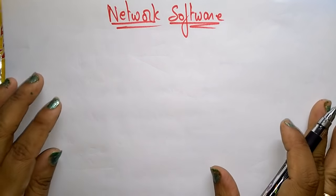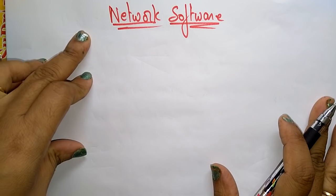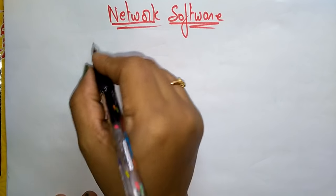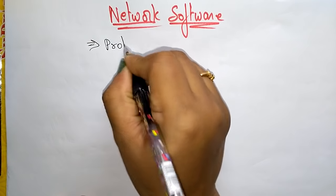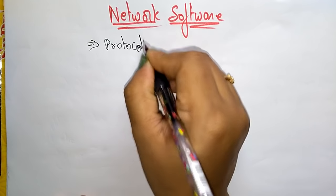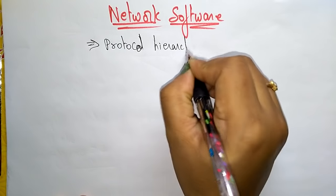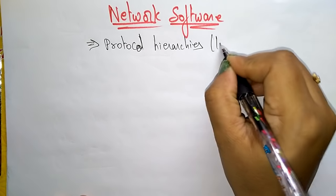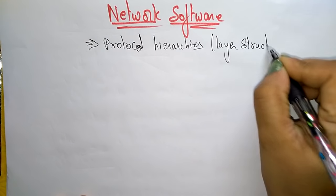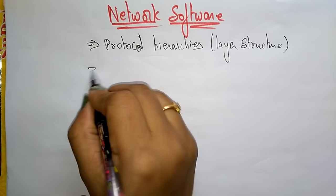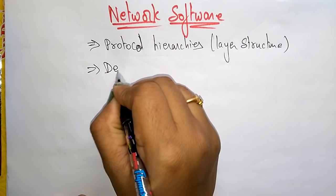Network software also has some design issues. The first thing to consider is the protocol hierarchy, which is the layered structure. The network software first has to look at the protocol hierarchies, that is the layered structure, and next it has to think about the design issues of layers.